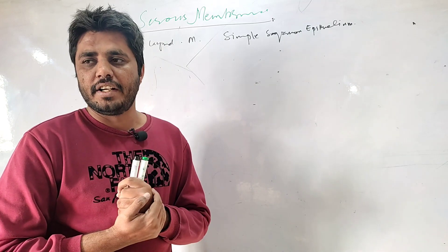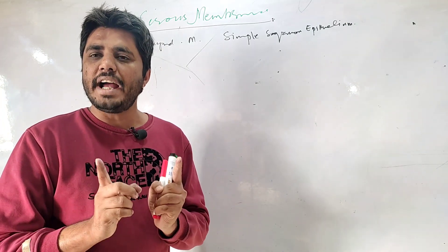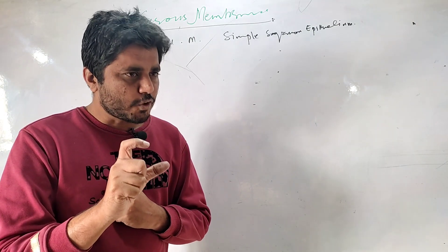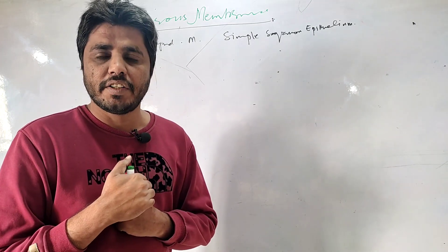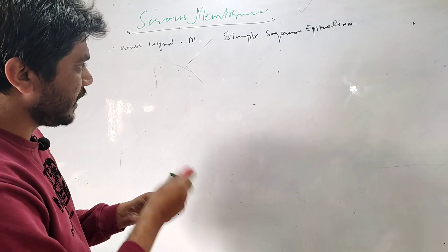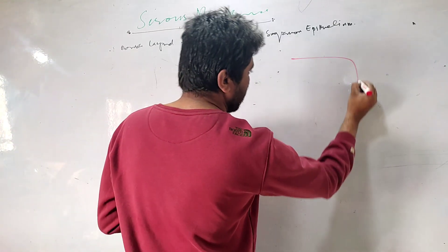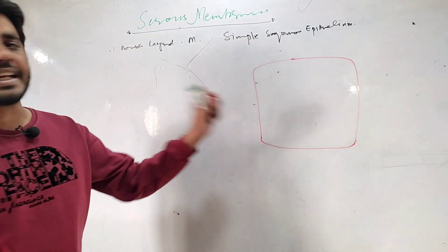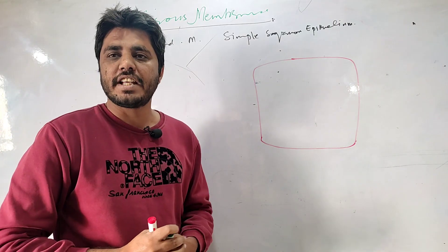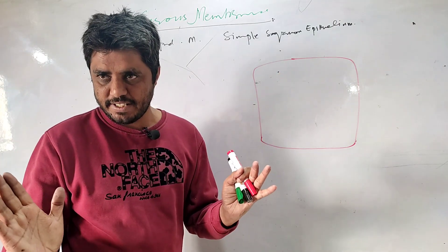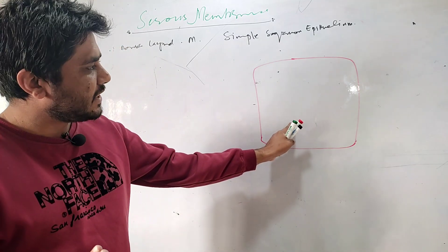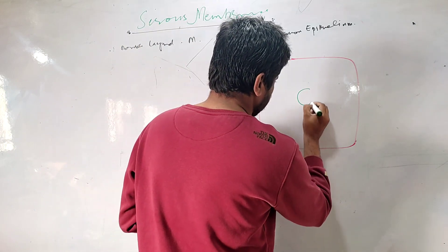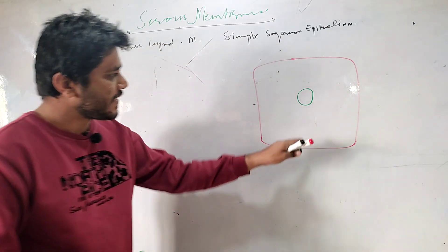Let me draw an ideal imaginary body cavity. Let's suppose this is a body cavity — a potential space, a compartment. A body cavity contains organs. The wall of the body cavity is covered by a membrane, and that membrane continues making a fold and covering the organ as well.